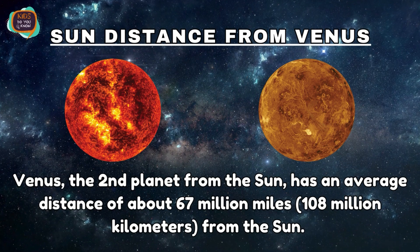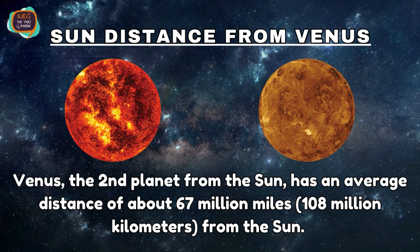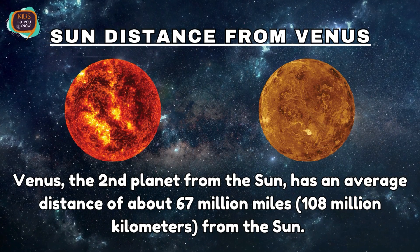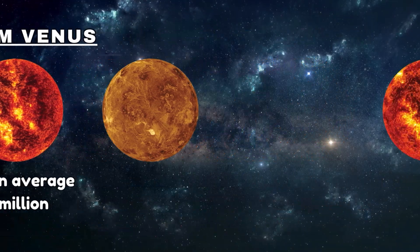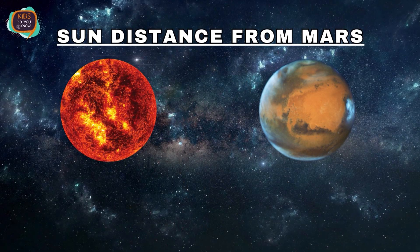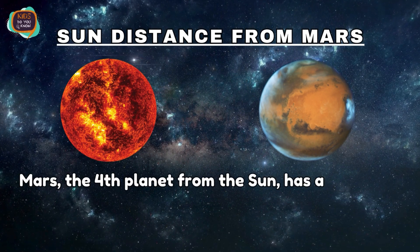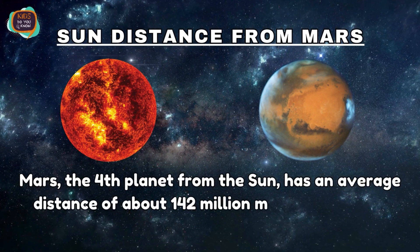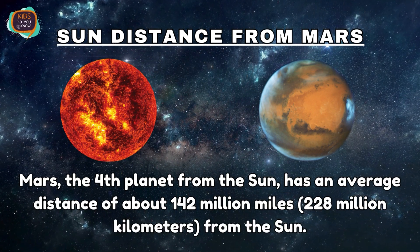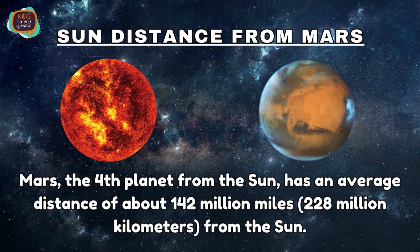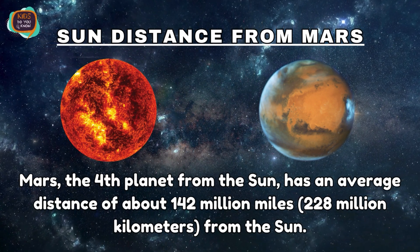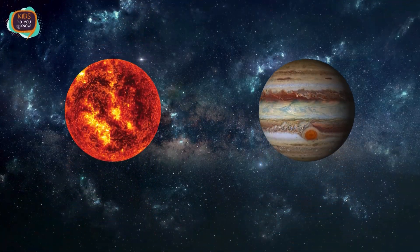Mars, the fourth planet from the Sun, has an average distance of about 142 million miles, or around 228 million kilometers from the Sun.